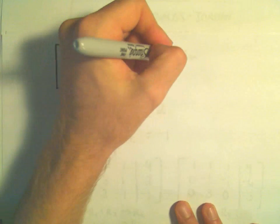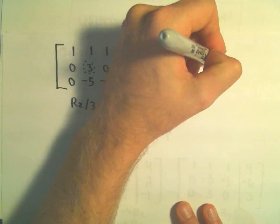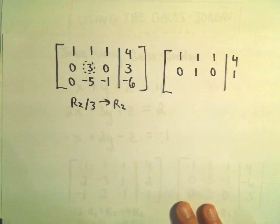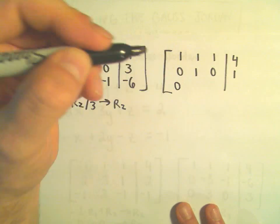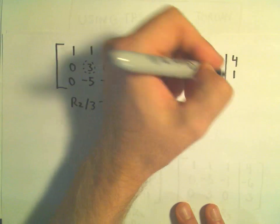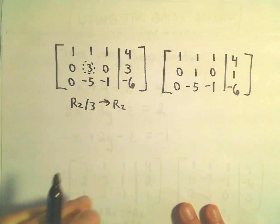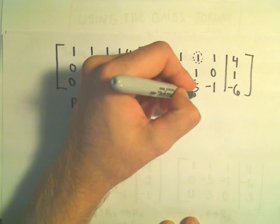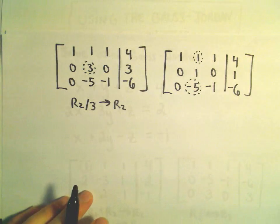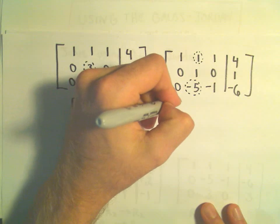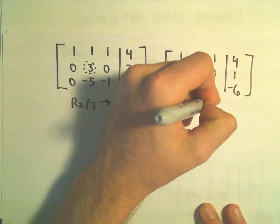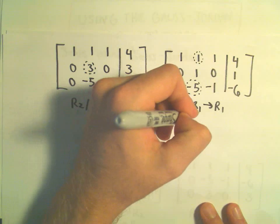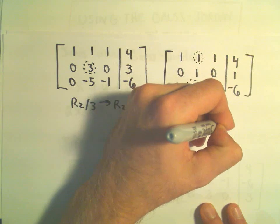The first row stays: 1, 1, 1, 4. After dividing the new row 2 by 3 we get 0, 1, 0, 1. The third row we're leaving alone: 0, negative 5, negative 1, negative 6. Now we want to get zeros in the first row and in the third row in the second column. So I'm going to take negative 1 times row 2 and add that to row 1 to get my new row 1, and then take 5 times row 2 and add that to row 3 to get my new row 3.